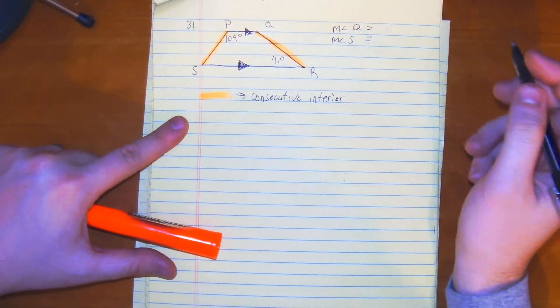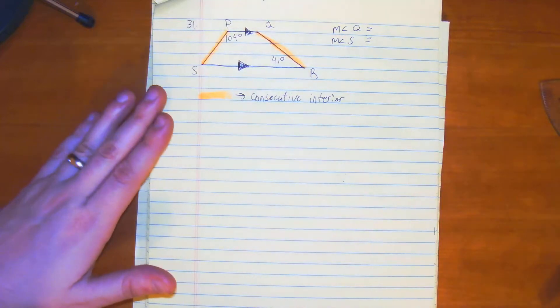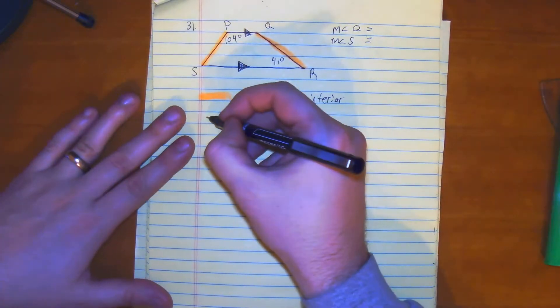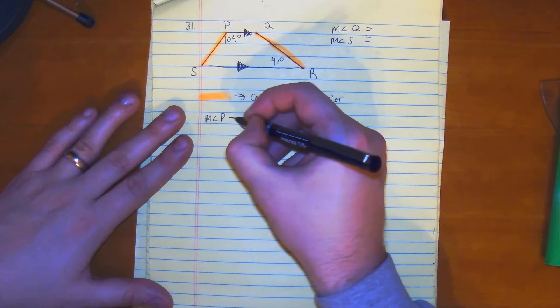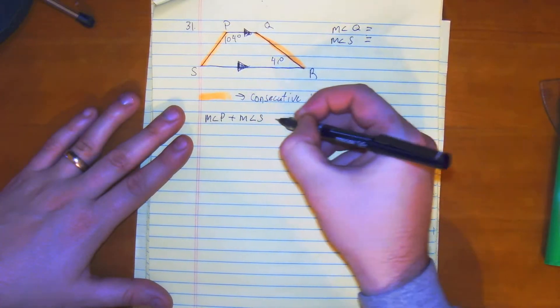So what does it mean for it to be consecutive interior angles? Well, what it means is that the measure of angle P plus the measure of angle S is equal to 180.